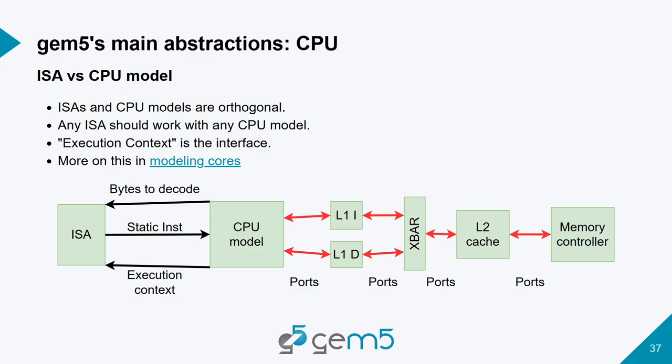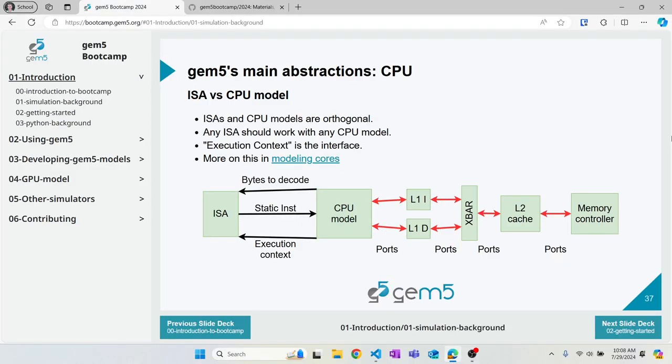We'll go into a lot more detail on the ISA and CPU interface, including how to add a new instruction to an ISA. That's it for this section: we covered a little bit about the history of GEM5, my views on simulation and why we use it, and a bit about GEM5's software architecture.